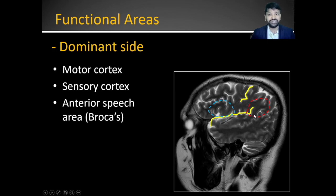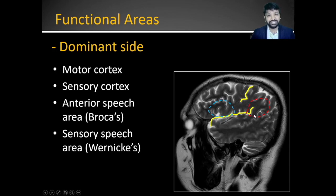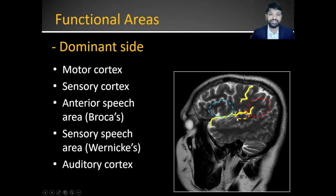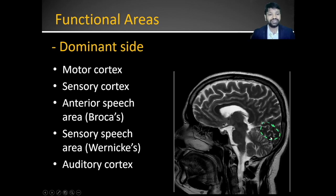Wernicke's area is found in the superior temporal gyrus. Along the posterior one-third, you will see a bilobal prosection corresponding to the auditory cortex, known as Heschl's gyrus. We have also seen the calcarine sulcus on the medial surface — on either side of the calcarine sulcus corresponds to the visual cortex.